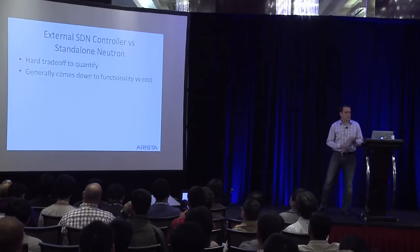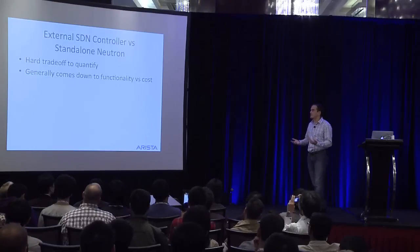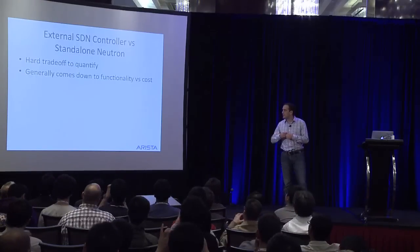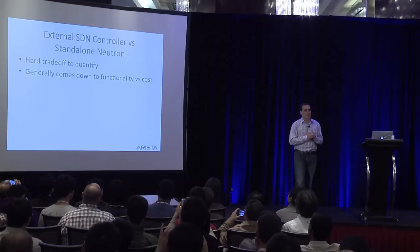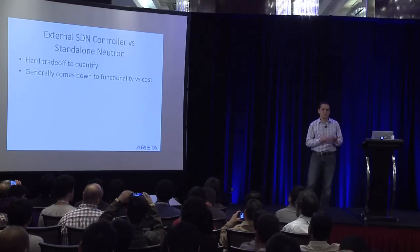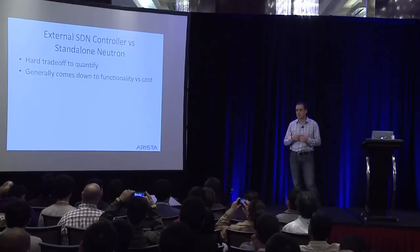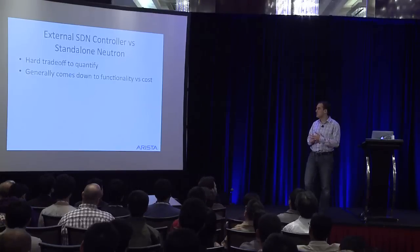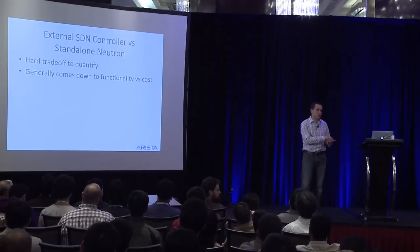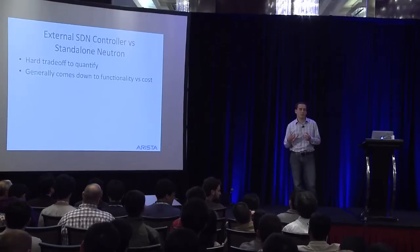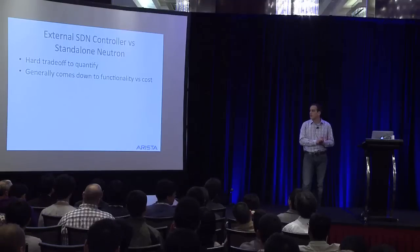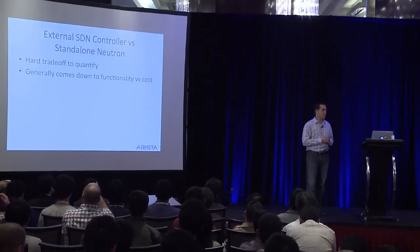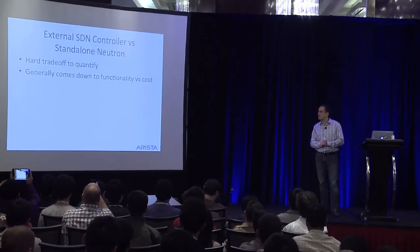The last key design decision is whether you use an external SDN controller or what I'll call standalone Neutron. This is a hard trade-off to quantify — it really depends on what you're trying to do and what your business is. Fundamentally, this comes down to a trade-off of features versus costs. Depending on your feature requirements and what you need out of your network, you may decide to choose a particular SDN controller, or you may decide to use standard Neutron with the ML2 plugin. The trade-offs vary a lot depending on what you choose.